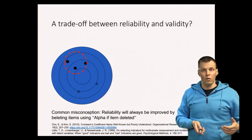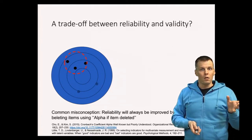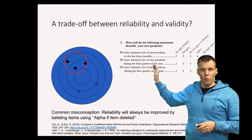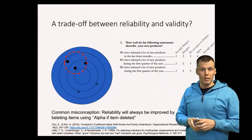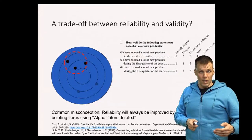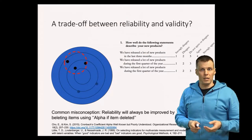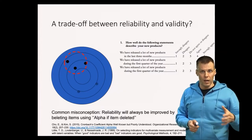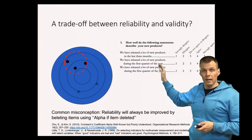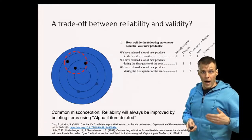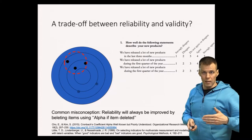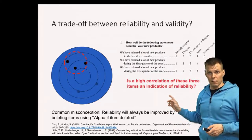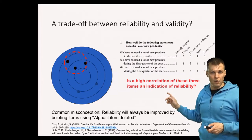Another important thing you need to understand is how the items are worded. Let's say we have a scale supposed to measure innovativeness and we have three items: the first is 'we have released a lot of new products in the last three months,' the second is 'we have released a lot of new products in the first quarter of the year,' and then we ask the same question again. These three questions are highly correlated — but is that evidence of the reliability of our innovativeness scale? The answer is no. It is not valid evidence of reliability because these items ask the exact same thing in slightly different words, violating the parallel tests assumption that classical test theory makes. The high correlation between these three items is not an indication of reliability — instead it indicates that these are not parallel tests.